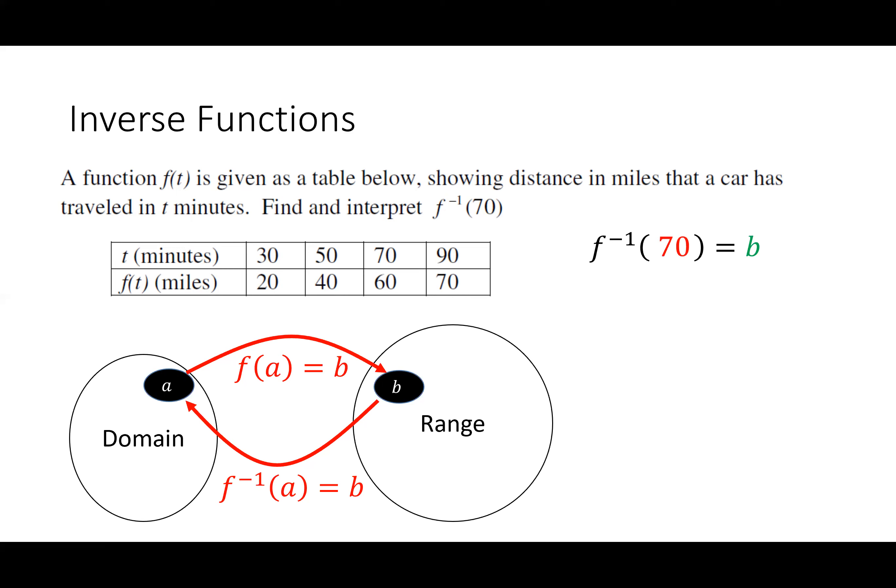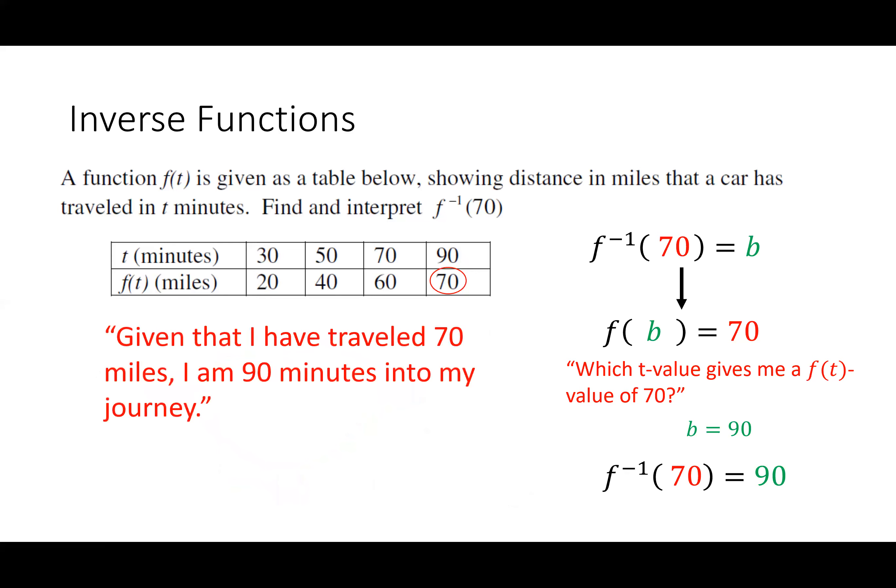So F inverse of 70, what does that mean? That means what number, when I plug it into my original function, gives me 70 as a Y value. So there's 70 in my Y value. I want to know what its corresponding X is. B is going to be equal to 90. So F inverse of 70 is equal to 90. So think of it like if I were going to say, what's F of 90? You'd start with 90 in the T and you'd map it to the Y value, which would be 70. I'm going the opposite direction with an inverse function. Given that I have traveled 70 miles, I'm 90 minutes into my journey. This is obviously the reverse of the statement. If I have traveled for 90 minutes, I'm 70 miles into my journey.